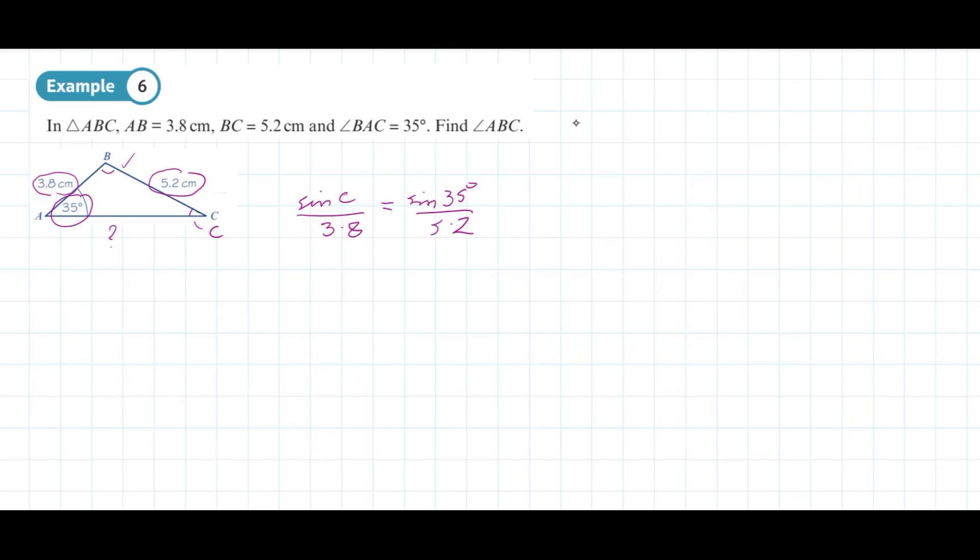Now we're going to multiply both sides by 3.8, so we have sine of C equals 3.8 times sine of 35 degrees all divided by 5.2.